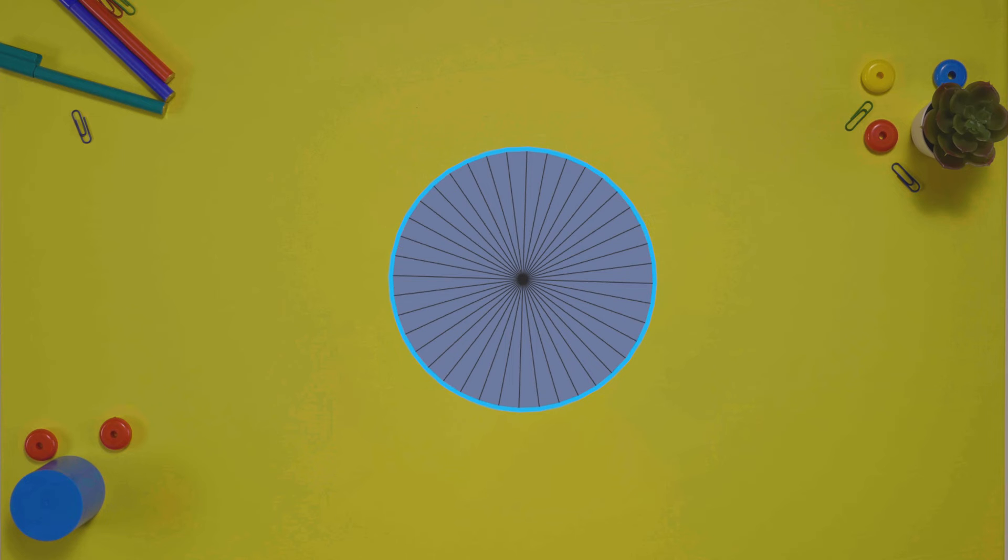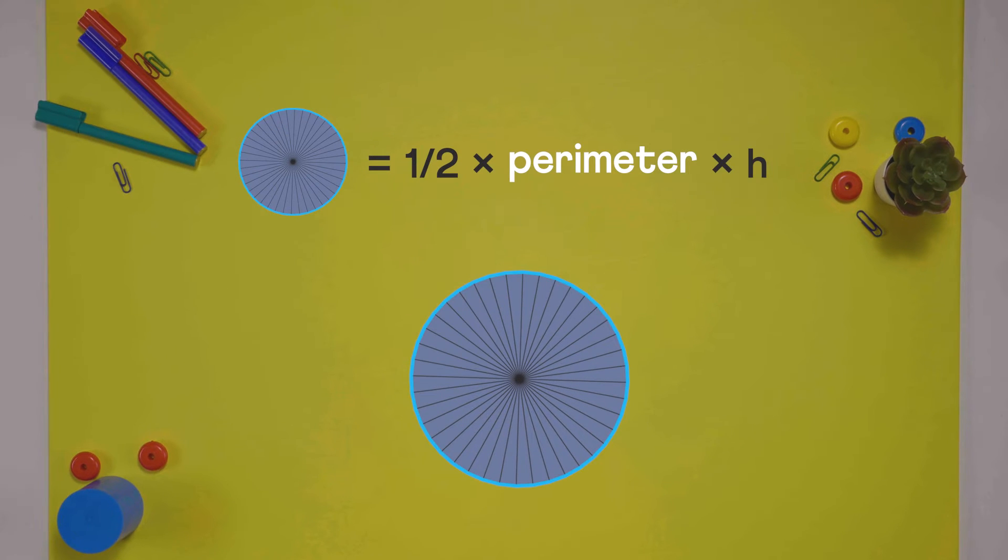So no matter the number of sides, the total area will always be half times perimeter times height.